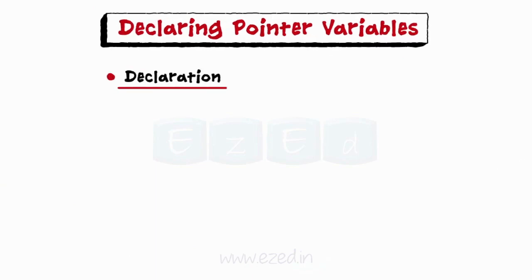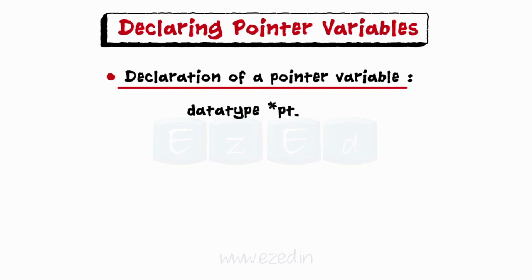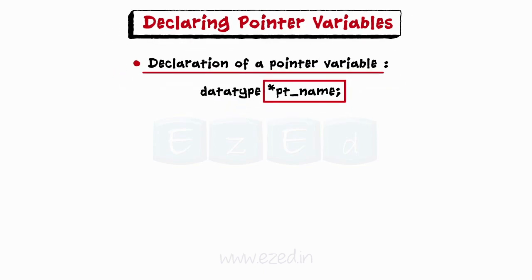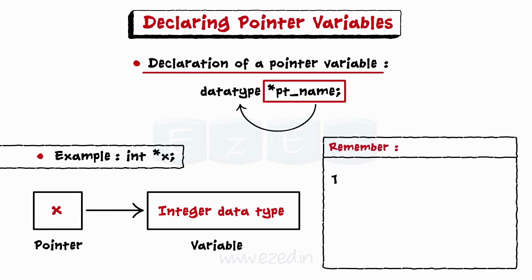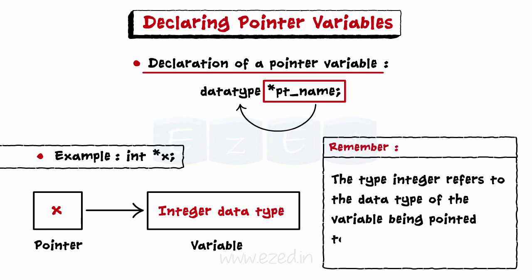Let us learn how to declare pointer variables. The declaration of a pointer variable takes the form data type of the pointer variable followed by the pointer name. This informs the compiler pt underscore name points to a variable of type data type. Example, int pointer x declares the variable x as a pointer that points to an integer data type. Remember that the integer refers to the data type of the variable being pointed to by x.